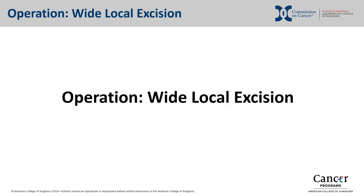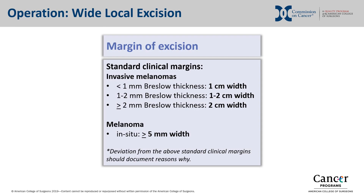We will now discuss the operative standards for curative intent wide local excision of primary cutaneous melanoma. Evidence-based recommendations for radial margin width are based on the Breslow thickness of the melanoma. Clinical margin width is measured from the edge of the primary lesion if present at the time of surgery, or from the edge of the previous biopsy scar. For invasive melanoma with a Breslow thickness less than 1 mm, a clinical margin width of 1 cm is recommended.